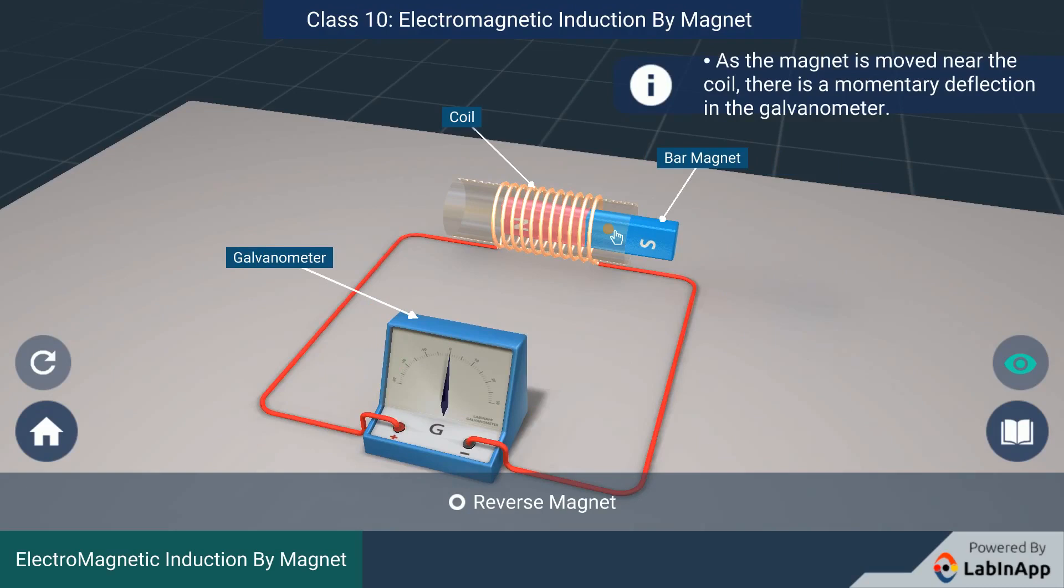As the magnet comes to rest, the deflection of the galvanometer stops.